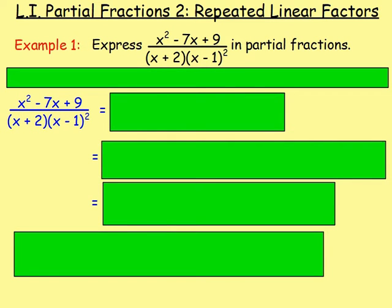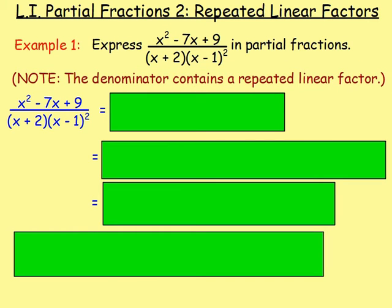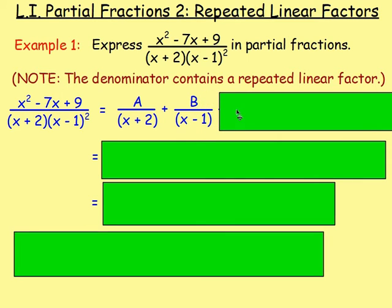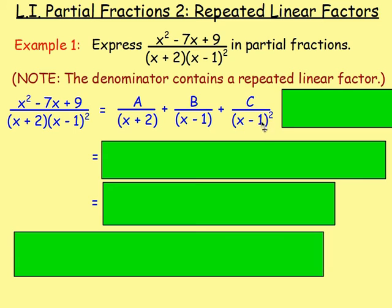Let's try some examples. Example 1: express x squared take away 7x plus 9 over (x+2)(x-1)² in partial fractions. The first thing we notice is that there is a repeated linear factor — x take away 1 is repeated, we've got it squared, so it's (x-1)(x-1). Therefore, when we write this in its partial fractions: x plus 2 is not repeated, it's a distinct linear factor, so it'll just be a over (x+2). Because x take away 1 is repeated, it's going to be plus b over (x-1) to the power of 1, plus c over (x-1) to the power of 2.